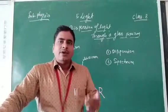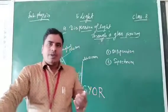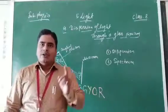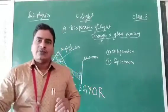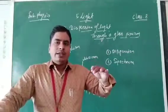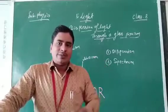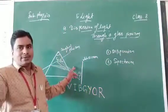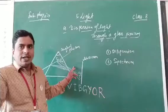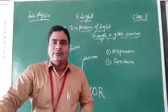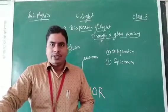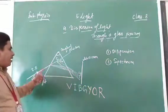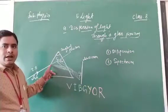Earlier we have discussed about the topic of dispersion for a single light. When a light passes through a glass prism, it will deviate from its path when it emerges out from the glass prism — that is called the angle of deviation.